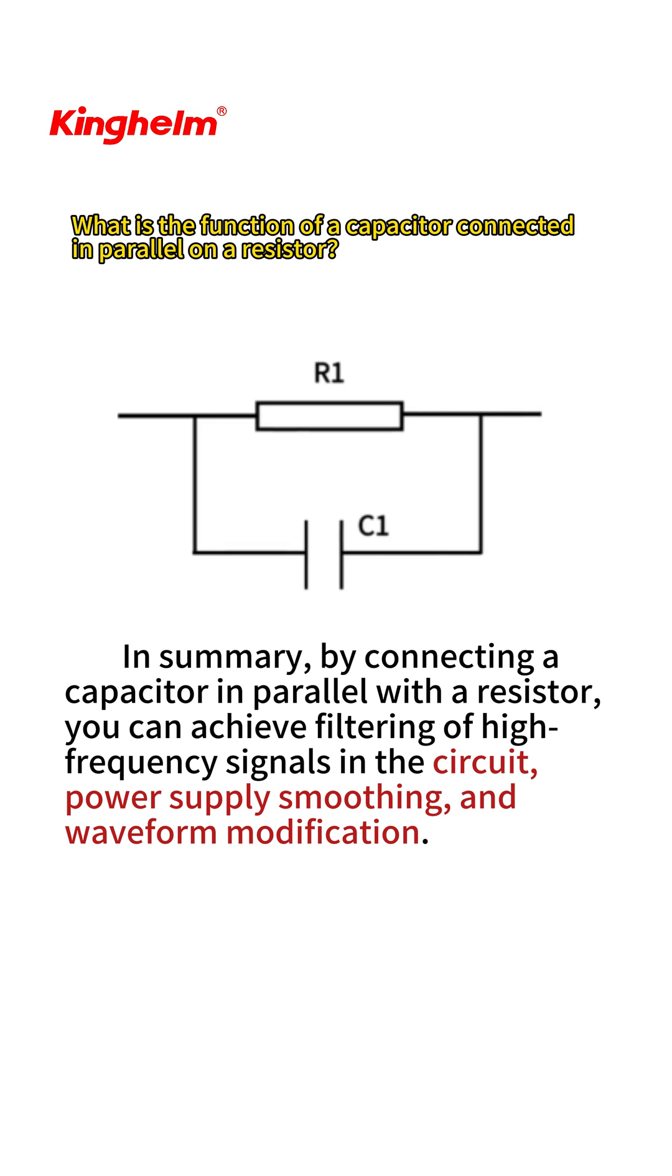In summary, by connecting a capacitor in parallel with a resistor, you can achieve filtering of high-frequency signals in the circuit, power supply smoothing, and waveform modification.